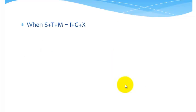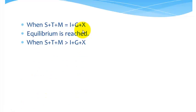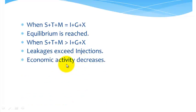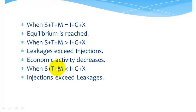So when we look at equilibrium again, as I said to you before, in this case, leakages are equal to injections. So when equilibrium is reached, that's the case. But what about if leakages exceed injections? That means economic activity decreases. And as I said to you earlier, if the leakages are less, the injections exceed leakages, then economic activity increases.